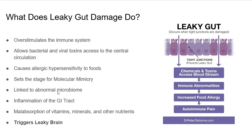Gluten is also linked to an abnormal microbiome. There have been a number of studies showing that gluten disrupts certain types of bacteria and their ability to flourish in the GI tract. We also know gluten directly causes inflammation in the GI tract, which can lead to malabsorption of vitamins, minerals, and other nutrients that are necessary for healthy brain function and the regulation of inflammation, but that can also do damage to the blood-brain barrier, triggering leaky brain.